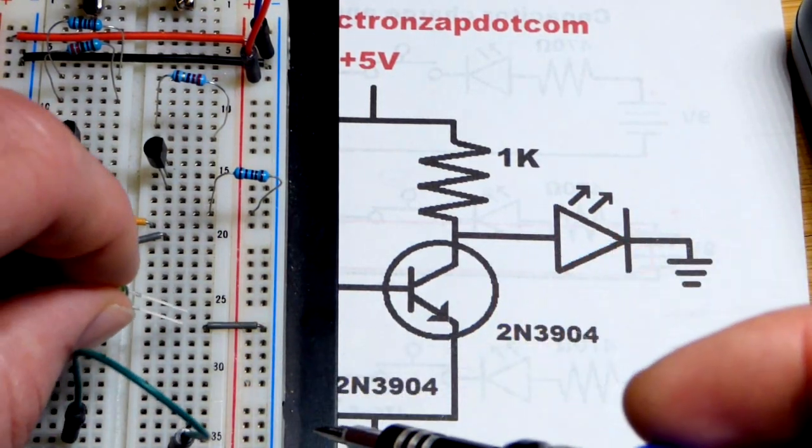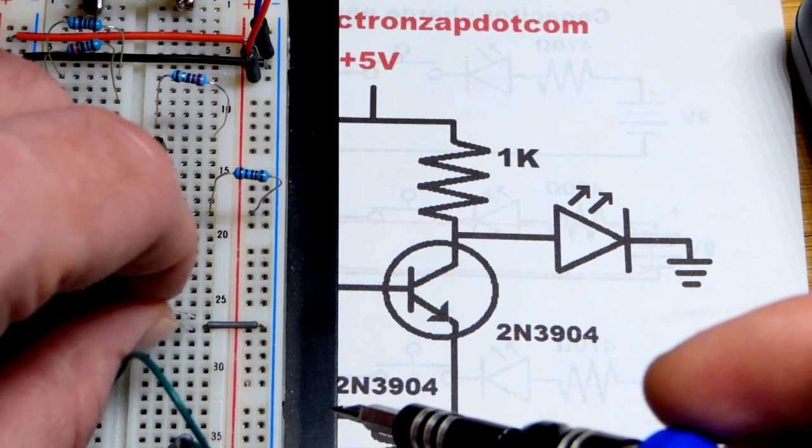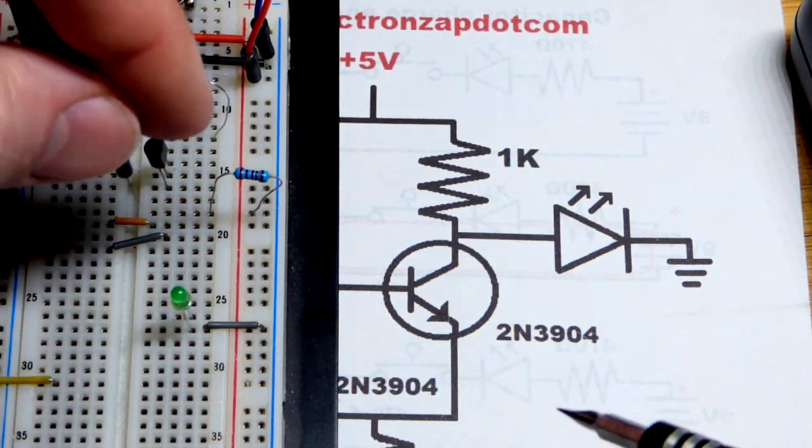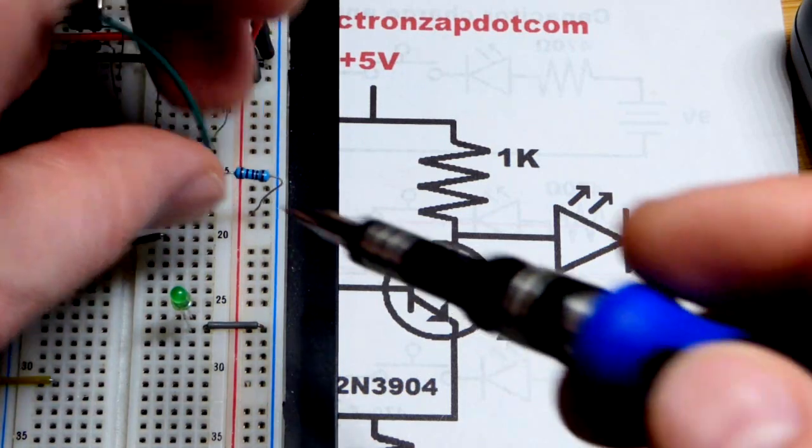The long lead, the anode here, we're going to connect it to a resistor with the jumper. We're just kind of getting it out of the way right here. Short lead, the cathode is going to the negative rail right there. That's the direction we need it to conduct. I'm going to use this green jumper.